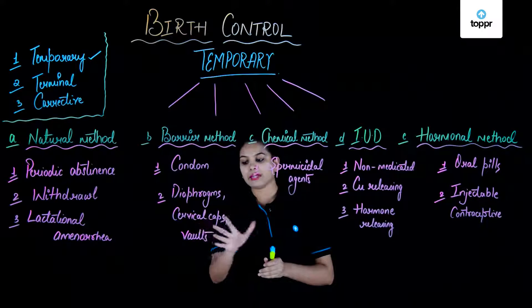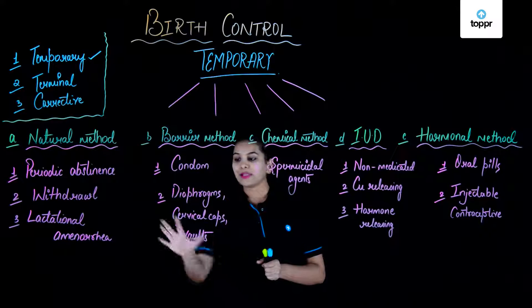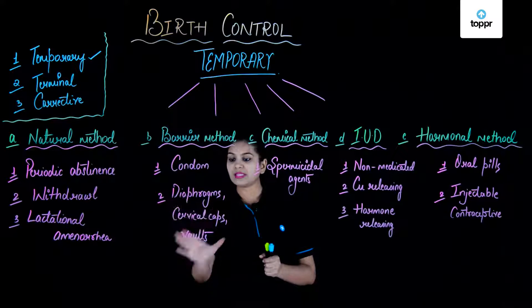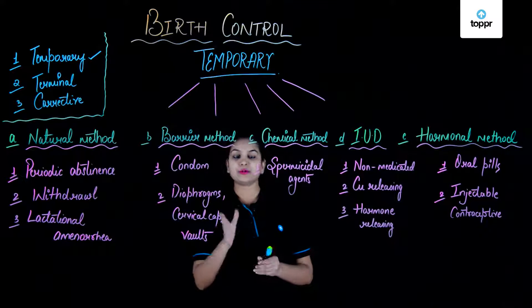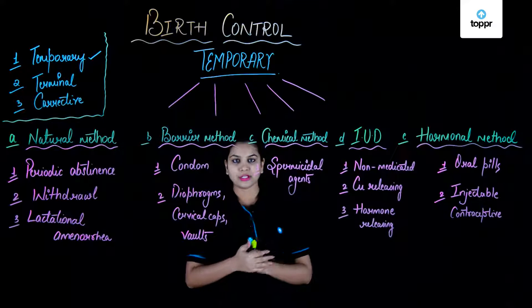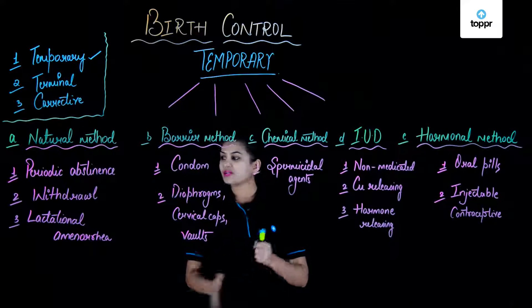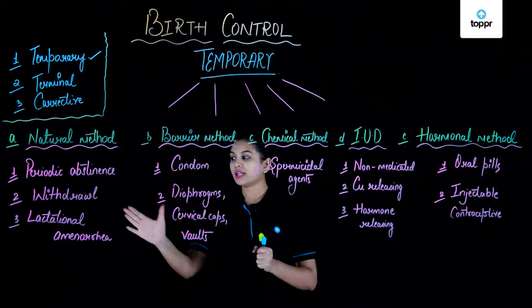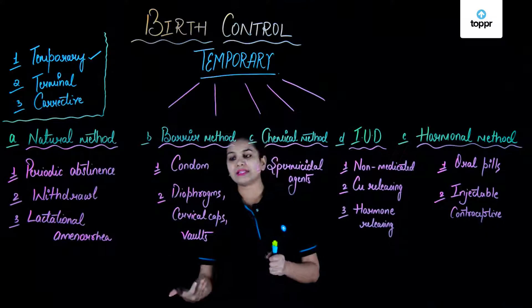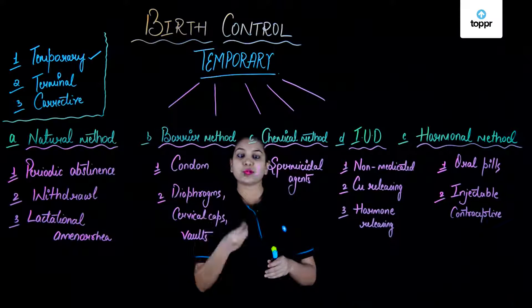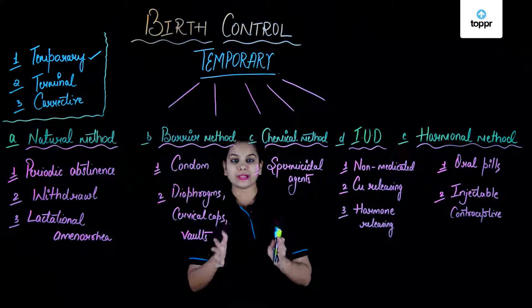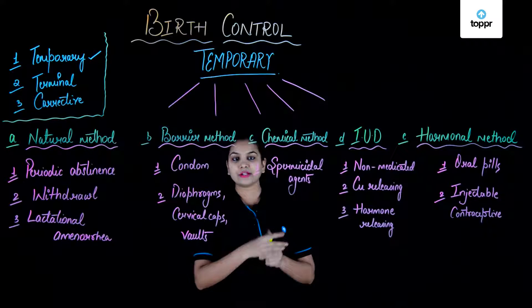Next are the diaphragm, cervical caps, or vaults — these are female contraceptives or female barriers. When placed in the female reproductive tract, specifically in the cervix, they prevent the entry of sperm further into the system. So in barrier methods we have rubber latex substances which when placed on the male penis or in the female cervix prevent sperm entry into the female genital tract.